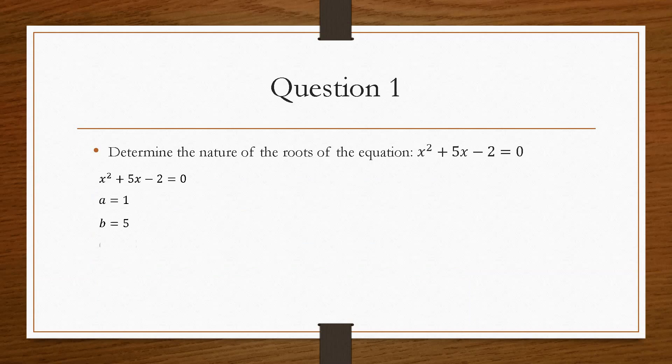So if we determine what the constants are, a is 1, b is 5, and c is minus 2.